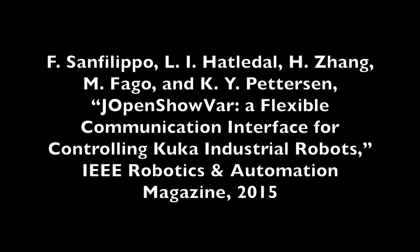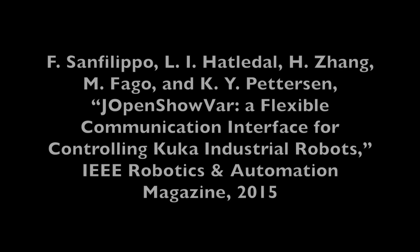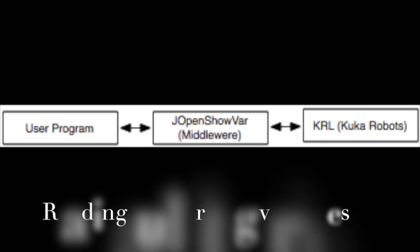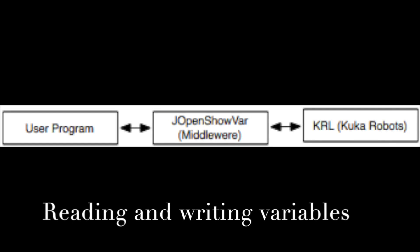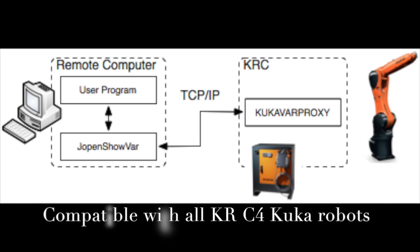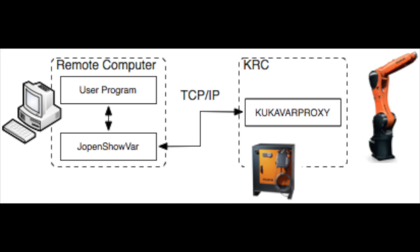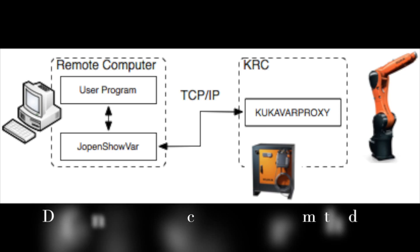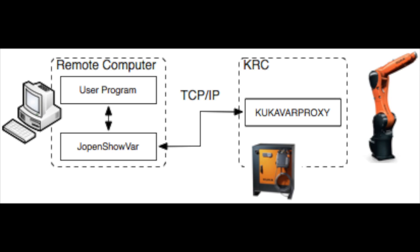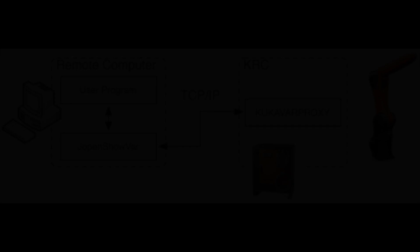JOpenShowVar is a Java open source cross-platform communication interface to KUKA robots that allows for reading and writing variables and data structures of the controlled manipulators. This interface runs as a client on a remote computer connected with the KUKA controller via TCP/IP. JOpenShowVar makes it possible to use different input devices and to develop alternative control methods. To show the potential of the proposed interface, two case studies are presented.